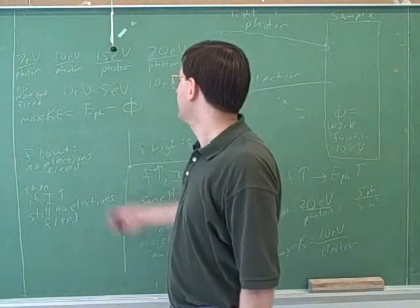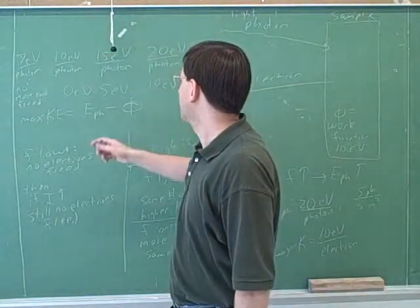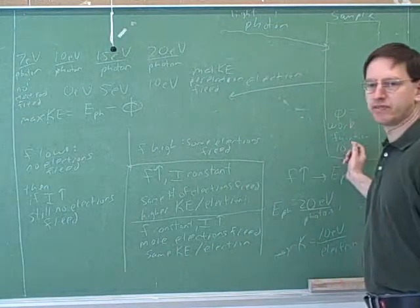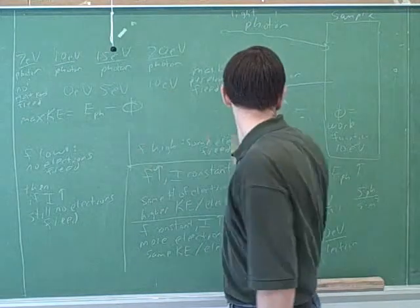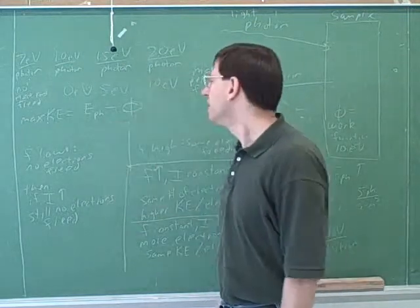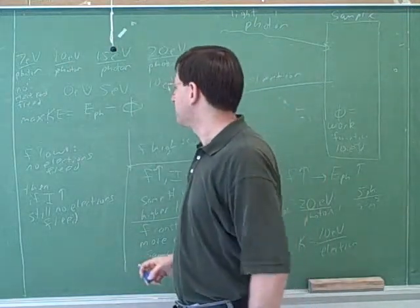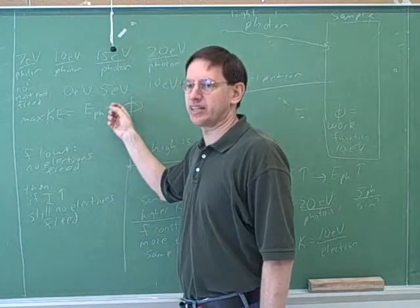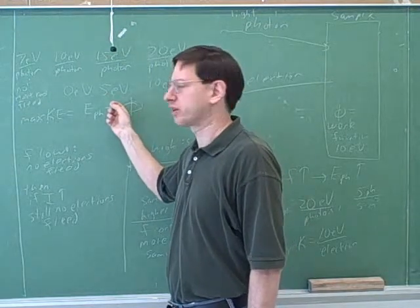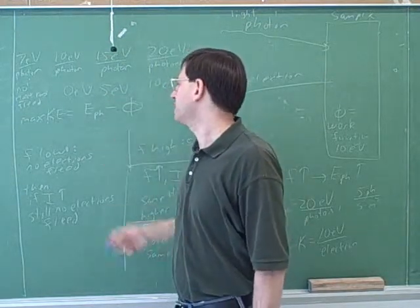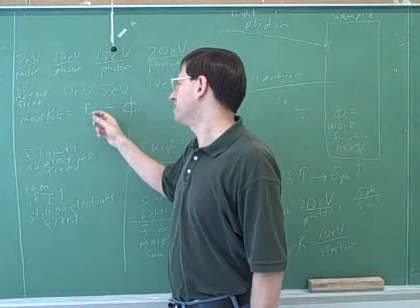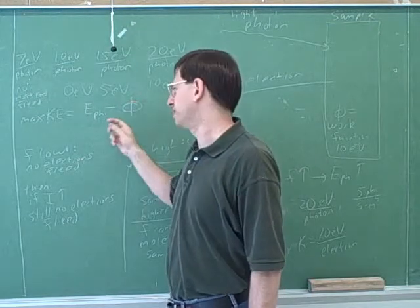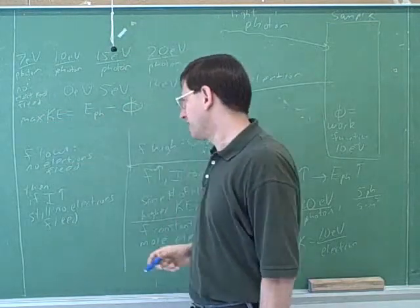For example, if we shoot a 15 electron volt photon, it's going to use a 10 electron volt to free the electron. Now there will be five electron volts left over. 15 minus 10 is five. So really I didn't want to introduce this too soon because this should just be common sense now that we understand the photoelectric effect.